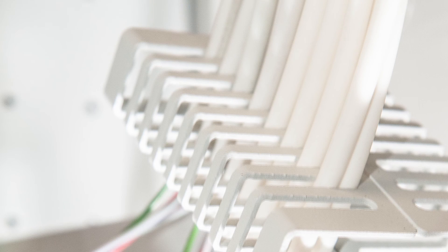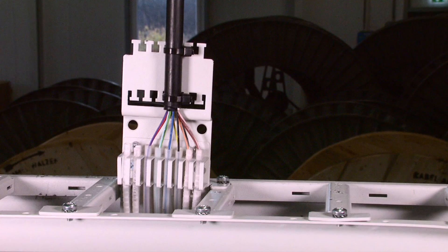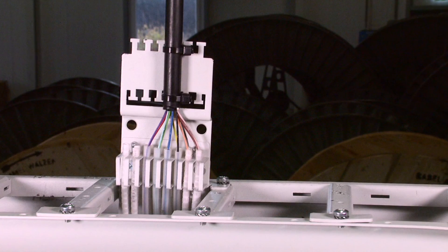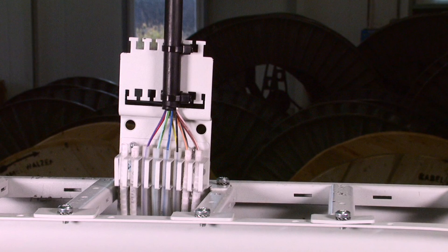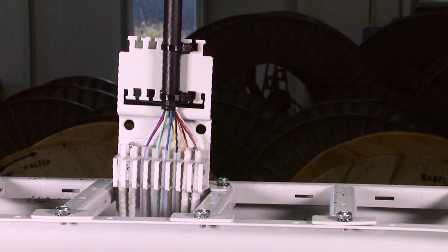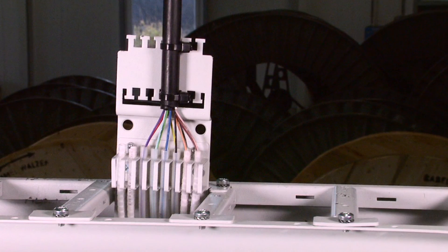Incoming cables can be inserted into the cabinet either from the top or from the bottom. Fixing and consequently strain relief is done at the cable catch points, which at the same time serve as fixation points for the fiber protection tubes.